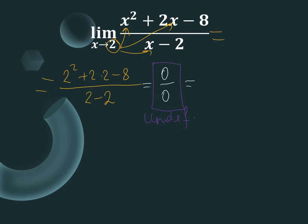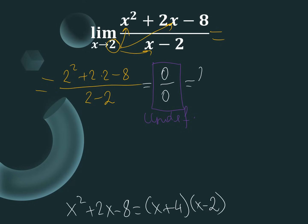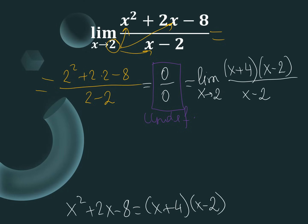We must continue our solution process. For x squared plus 2x minus 8 in the numerator, we use factoring and write it as x plus 4 times x minus 2. We rewrite the limit as x approaches 2 of x plus 4 times x minus 2 over x minus 2. We cancel out x minus 2, leaving limit x approaches 2 of x plus 4.